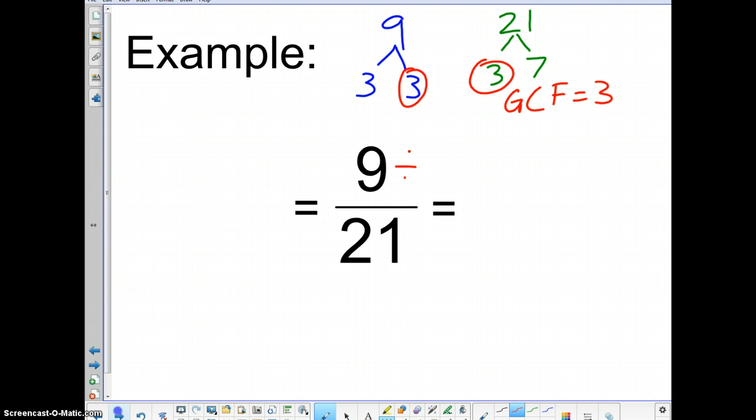Which means that we are going to divide both of these, both the top and the bottom, by three. Nine divided by three is three. And twenty-one divided by three is seven. And both three and seven are primes, which will make it the simplest form that we can make. So that's how finding the greatest common factor can help you in simplifying a fraction.